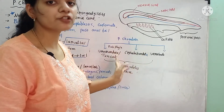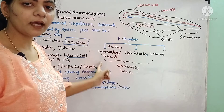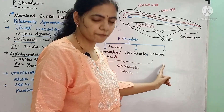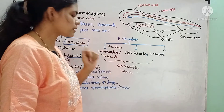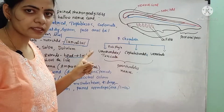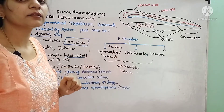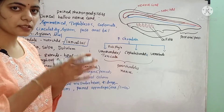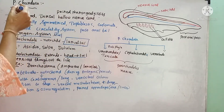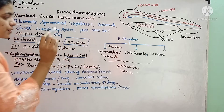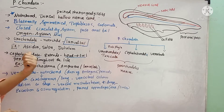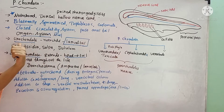Based on the presence of notochord, Phylum Chordata is divided into three subphyla: Subphylum Urochordata (otherwise called Tunicata), Subphylum Cephalochordata, and Subphylum Vertebrata. In Urochordata, the notochord is present only in the larval stage, and that too only in the tail region. In adult stages, the notochord does not persist. Examples are Ascidia, Salpa, and Doliolum.